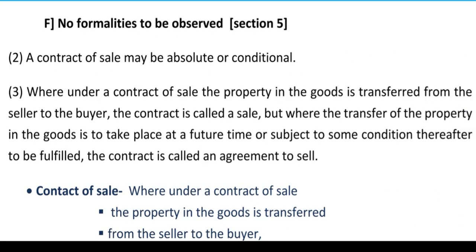The next ingredient is no formalities to be observed, mentioned in Section 5. A contract of sale may be absolute or conditional. It is not necessary to observe formalities — meaning price can be paid at any time, possession of goods can be transferred at any time. Unlike immovable property transfers where registration is compulsory, here no such formality is required. A contract of sale may be absolute — no condition imposed — or conditional, meaning some conditions are imposed, and only after those conditions are fulfilled will the property in goods transfer.